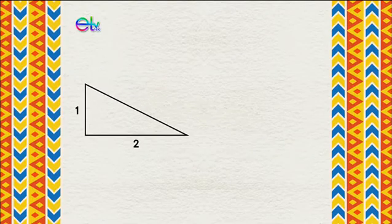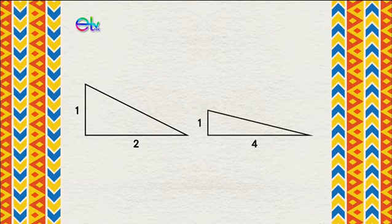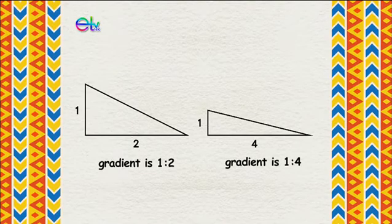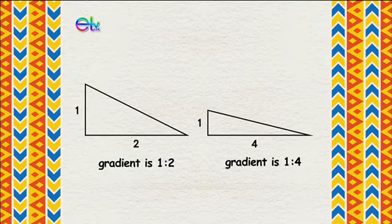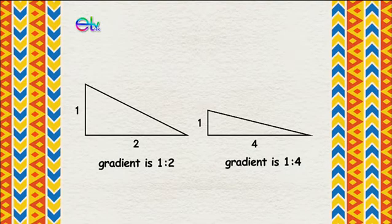A gradient of 1 to 2 is steeper than a gradient of 1 to 4. This is because for a gradient of 1 to 2, there only needs to be 2 units of horizontal run to achieve 1 unit of vertical rise, while a gradient of 1 to 4 would require 4 units of horizontal run. You can see which one has a greater gradient by comparing the two right-angled triangles. In daily life, there are quite a lot of similar comparisons.